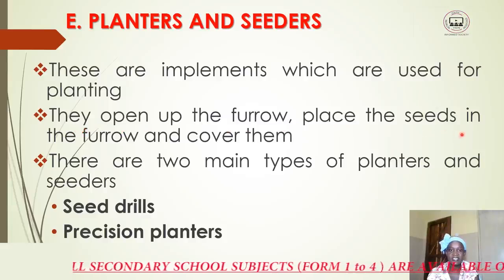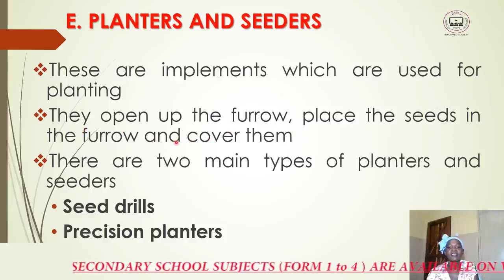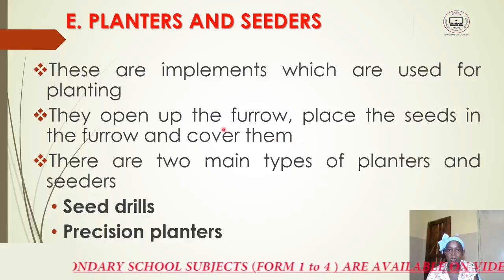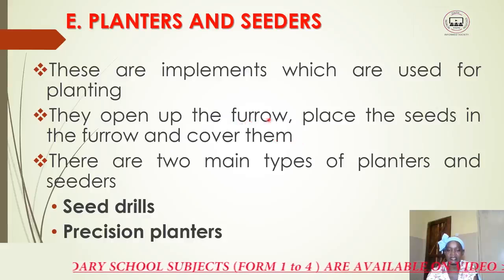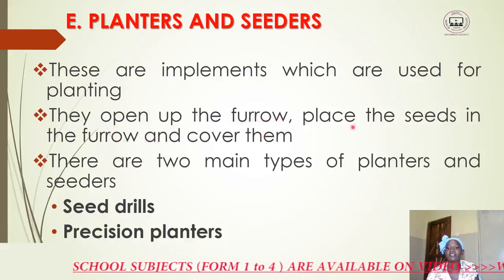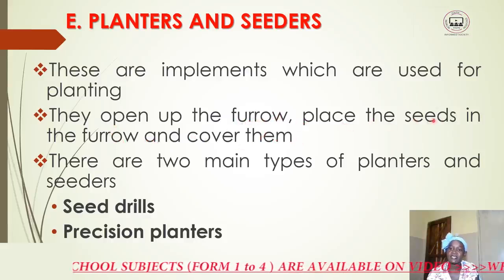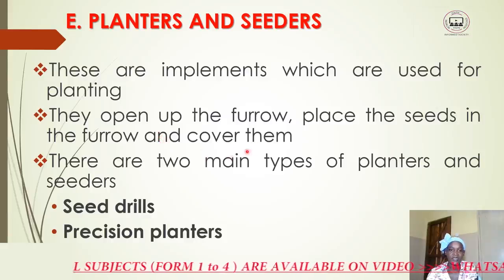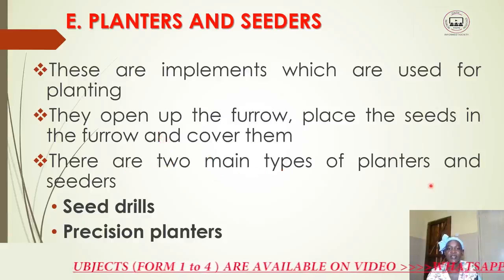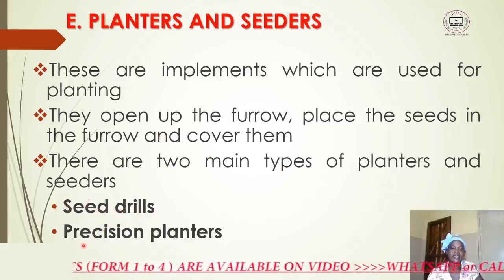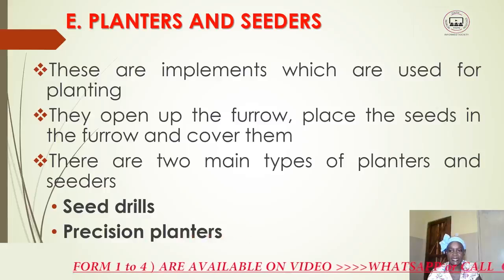Planters first open up the furrow, then press the seeds into the furrow, then cover them — the machine doing all three of these activities. There are two main types of planters or seeders: seed drills and precision planters.